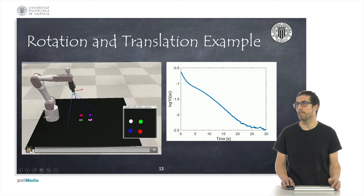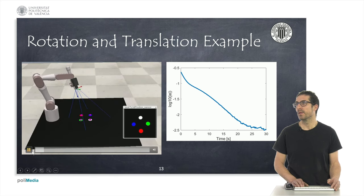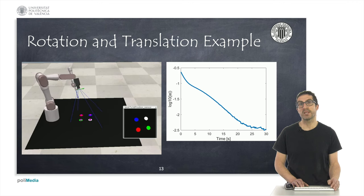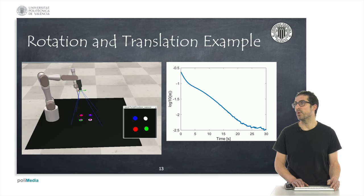Let's see how it works. Again, it can be seen that despite the difficulty of the problem, the IBVS algorithm is capable of solving the situation, moving the camera to a configuration where the error is very small.